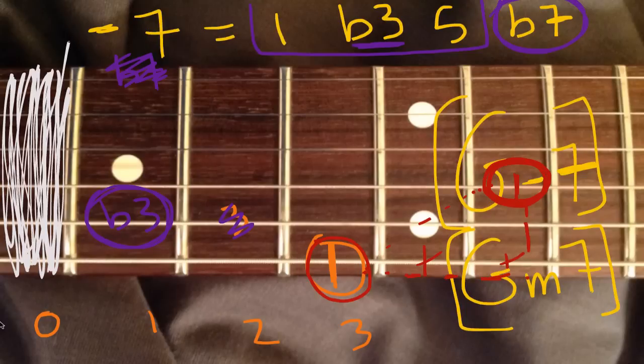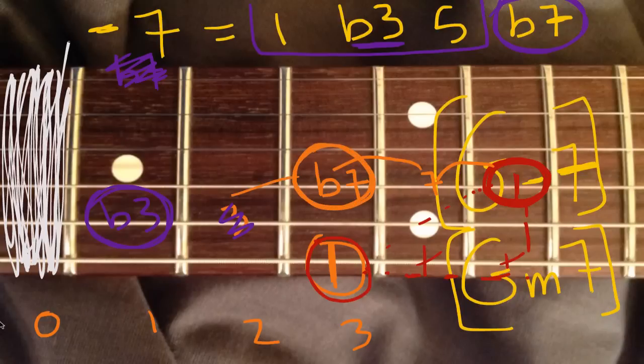And the reason why we need to find that octave of this root note is so we can find the flat seven. As we saw with the G dominant seven chord, you just go to the left two. So here would be the regular seven, which we don't want. We want flat seven. And this is a pretty useful and common way to play a minor seven chord. That's the shape.